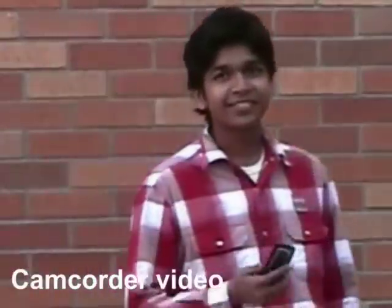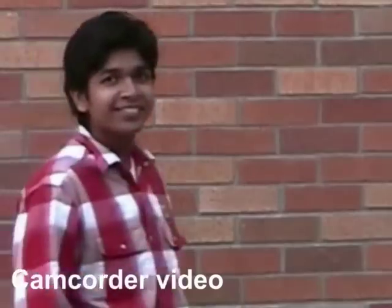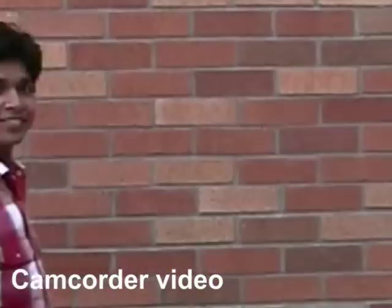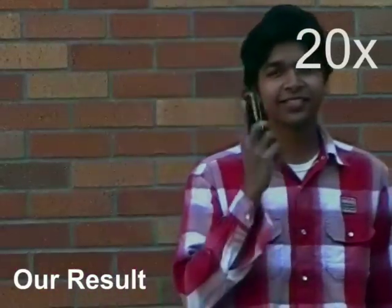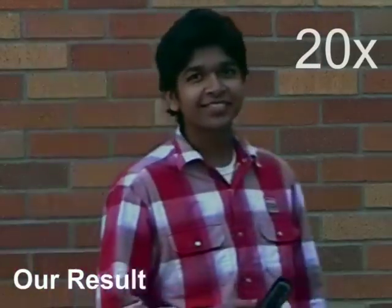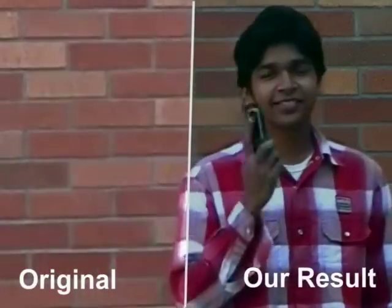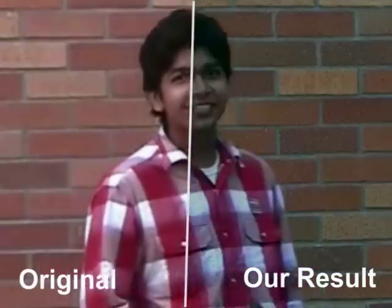In addition to simulating hybrid data, we also captured data using a camcorder and a digital SLR placed close together. The SLR captured stills at 6 megapixel resolution at 3 frames per second, while the camcorder captured video at 720 by 405 resolution at 30 frames per second. We zoomed into part of the video to compare the resolution improvement. Our system improves the video and recovers high frequency details.